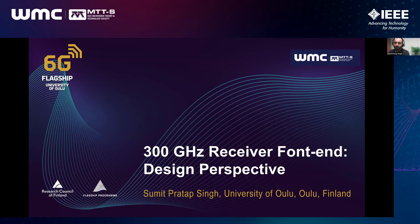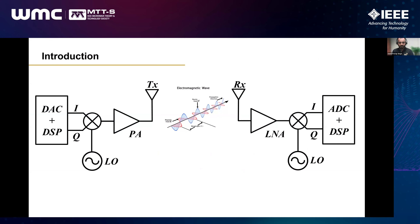The 300 GHz band is getting a lot of attention nowadays for many reasons. A receiver at this band could be for radars, sensing, imaging, and many other purposes, but for this particular talk I will mostly focus on the receiver for high data rate communication. I'll keep things at a basic level so students from bachelor's or master's degrees are also able to follow and understand the intricacies involved in circuit design.